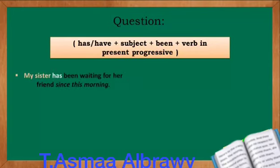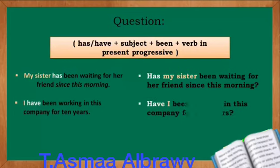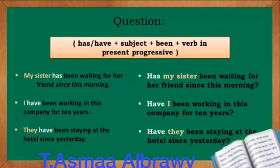Question examples: My sister has been waiting for her friend since this morning becomes Has my sister been waiting for her friend since this morning? Has and the subject my sister have changed positions. I have been working in this company for 10 years becomes Have I been working in this company for 10 years? They have been staying at the hotel since yesterday becomes Have they been staying at the hotel since yesterday?